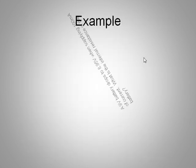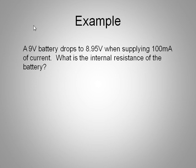Okay, so here's an example of this situation where we have a 9-volt battery, a typical transistor battery, and this is not an atypical situation where the voltage drops to 8.95 volts when the battery is supplying 100 milliamps of current. It's actually a pretty good 9-volt battery if it can do that and still maintain 8.95 volts. So what's the internal resistance of the battery? So I'll pause this here and show you not just the answer, but how to work it out. I'll give you a couple of seconds.